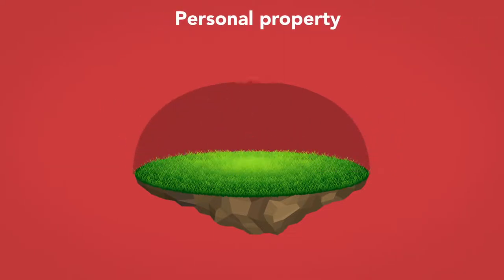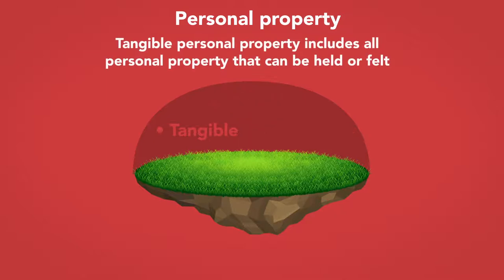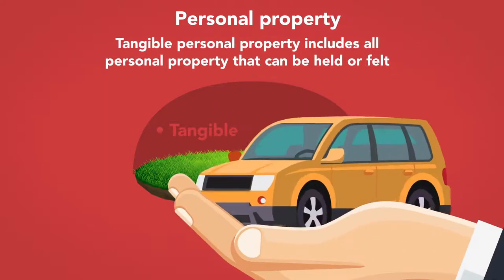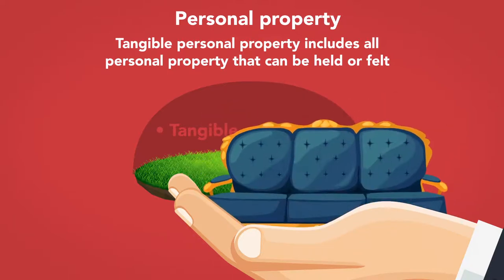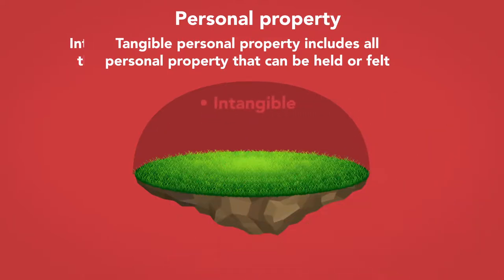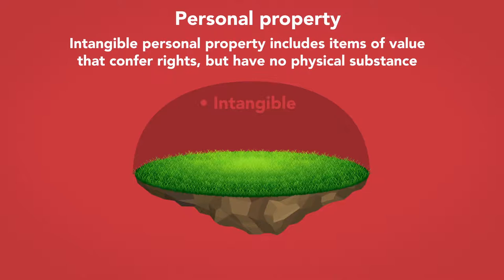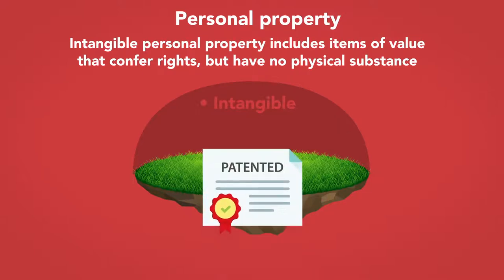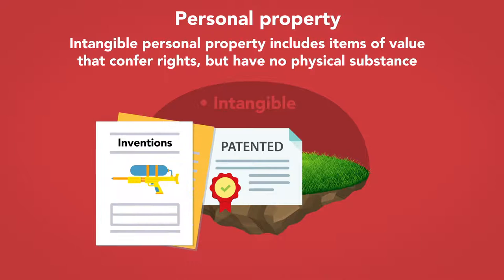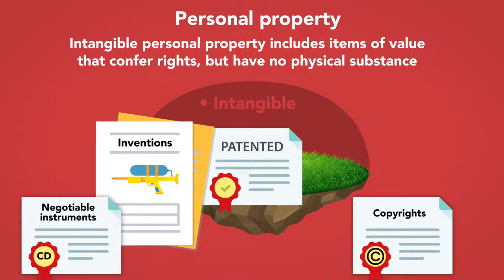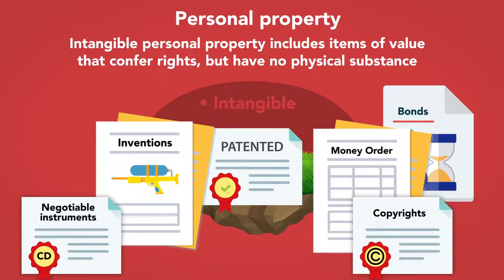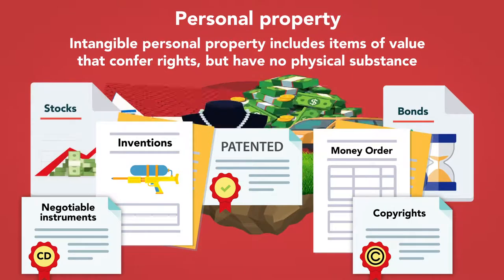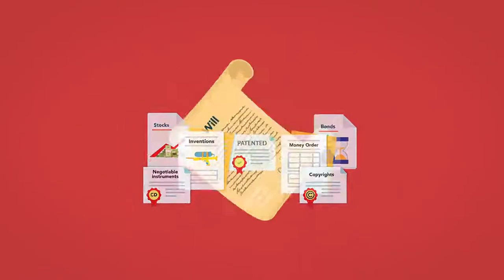Personal property is generally movable and may be tangible or intangible. Tangible personal property includes all personal property that can be held or felt, such as cars, furniture, clothing, and jewelry. Intangible personal property includes items of value that confer rights but have no physical substance, such as patents, inventions, copyrights, negotiable instruments, money orders, bonds, and shares of stock. All types of property may be disposed of by will.